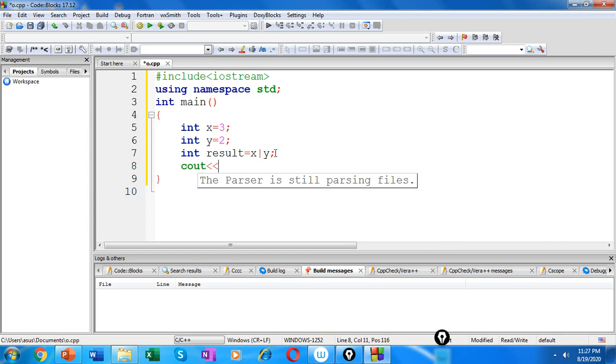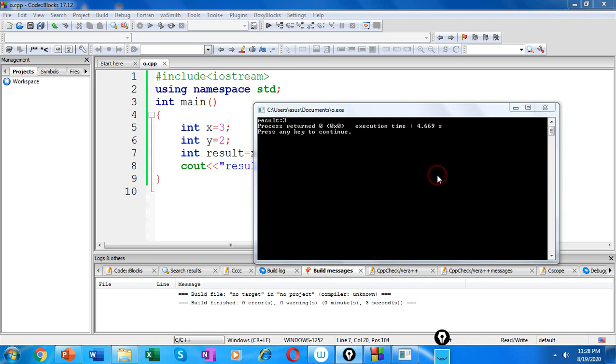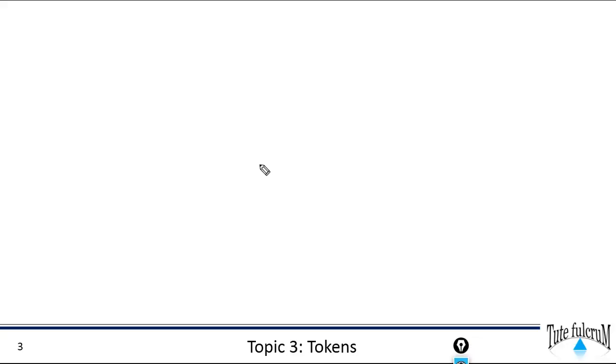Let's use a cout statement to verify our result. So this is our program. Let's build and run and verify our output. So our program works fine and as expected our output is 3. So this is how a bitwise OR operator works. Now let me explain you a program where you will be applying the bitwise OR operator.